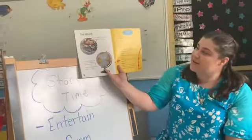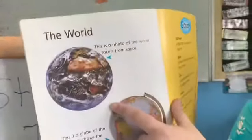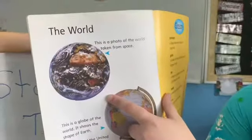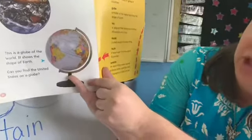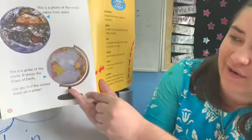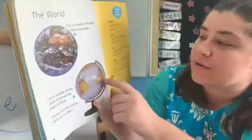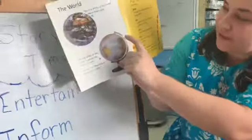This is a photo of the world taken from space, and this is a globe of the world — it shows the shapes of Earth. Can you find Thailand on a globe? That's a little hard to do. You'd have to turn the globe to see Asia. You can find America on a globe, but for Thailand you'd have to turn the globe like this to find it.